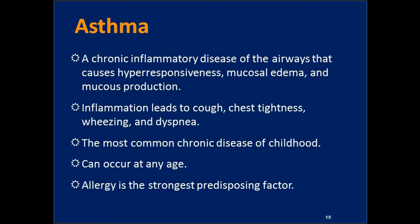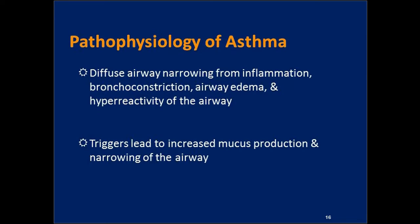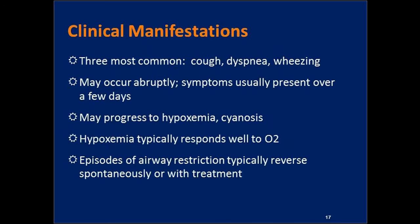Asthma is the most common childhood lung disease but can occur at any age. Allergies are the strongest predisposing factors, but asthma can develop in older teens or adults in their 30s and 40s. It can be activity-induced, and it can also develop as a result of untreated GERD — the theory being that slight aspiration leads to lung irritation and inflammation, triggering GERD-induced asthma. The three classic manifestations with asthma are cough, dyspnea, and wheezing — compared to COPD's classic three of chronic cough, increased mucus production, and dyspnea on exertion.